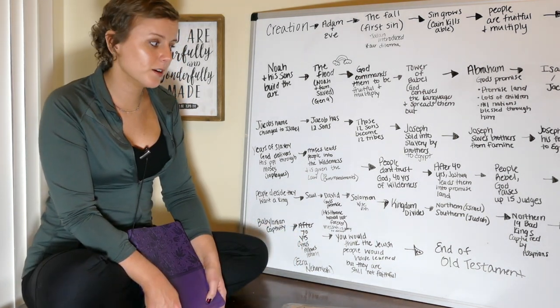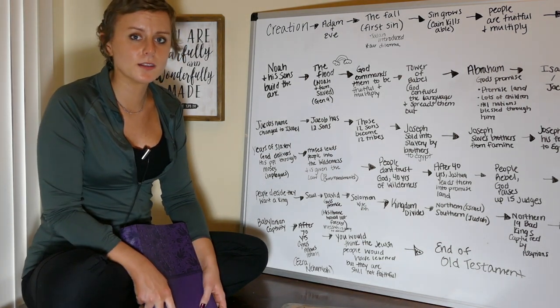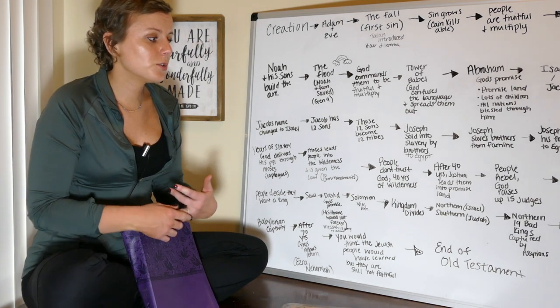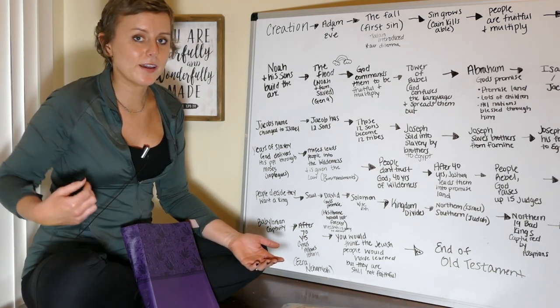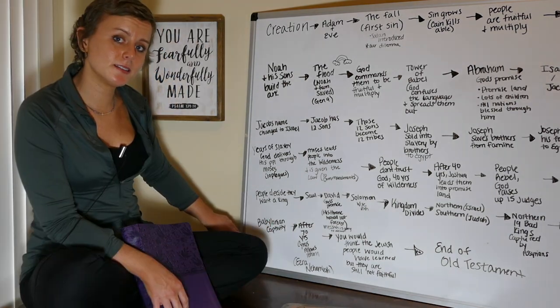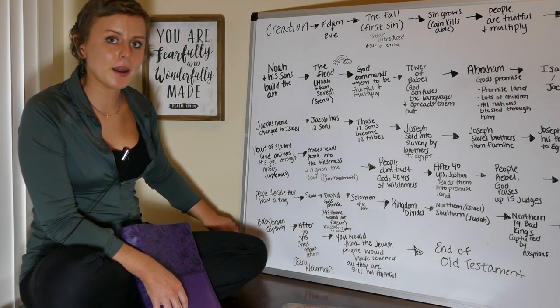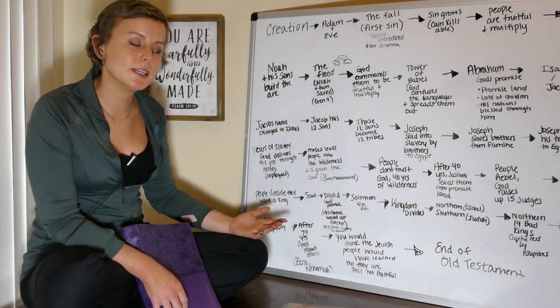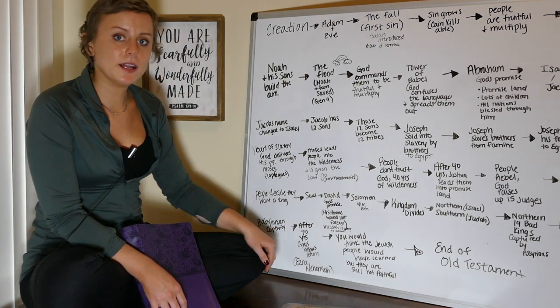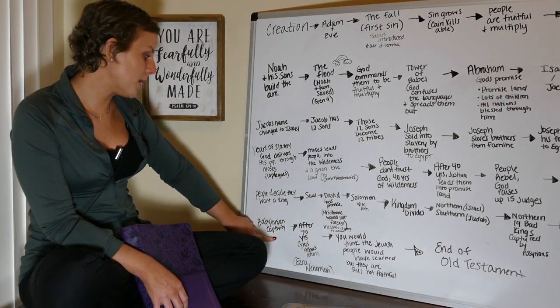And then there's the southern kingdom. This is also known as Judah. Judah also had 19 kings, but some of them were good, like Josiah. We're going to meet Josiah and Jeremiah. Josiah tried to reform the people, but he failed. They constantly turned away from God. And so God raises up another nation called the Babylonians. And in the book of Jeremiah, we're going to read about Jeremiah's warning. He says, hey, come back to God. There is a nation raising against you, and you're going to go into captivity, but the people don't listen. And so we have the Babylonian captivity.